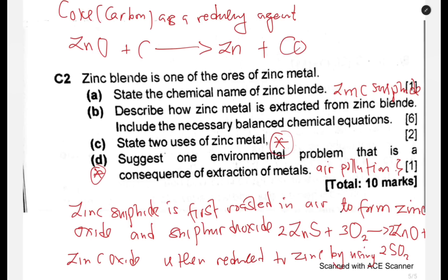So this is where we get to end. This is about extraction of zinc — quite short, but zinc comes up often. Now other metals that you need to study in terms of extraction: you should be able to look at copper, which has been missing in some papers for some time — so one of the ones you expect is copper. Then we also have iron. Iron has also been missing. Zinc came in 2023, but make sure that you know extraction of copper and all the stages involved, and also iron.